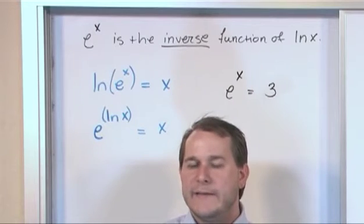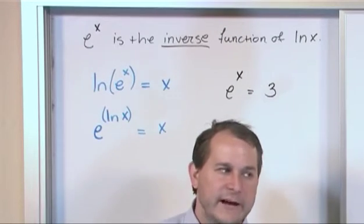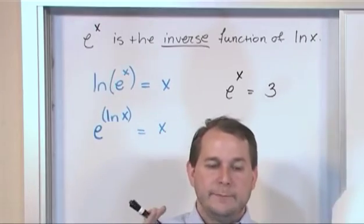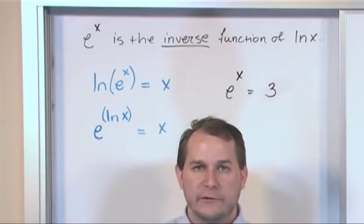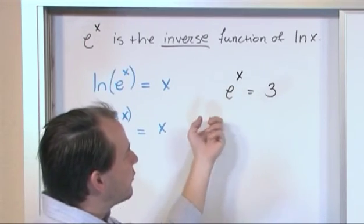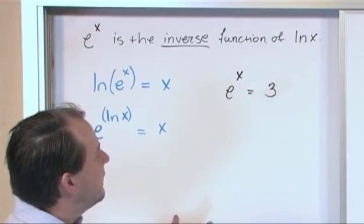You were taught that the opposite of a square root is to take the square of something. So you can basically remove a square root by taking the square of both sides of an equation, right? So here, how would you isolate x? Well, you can't add or subtract or multiply or divide. The only way to do it is to take the inverse.